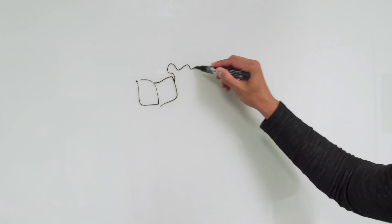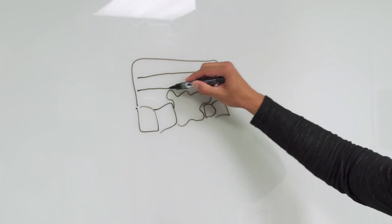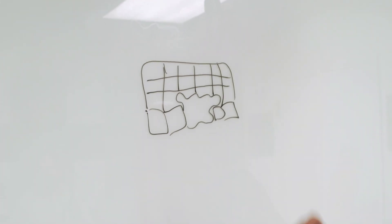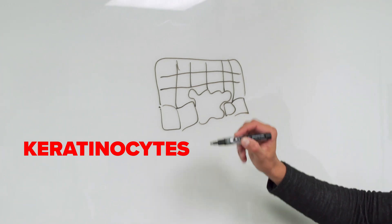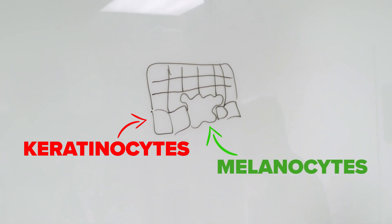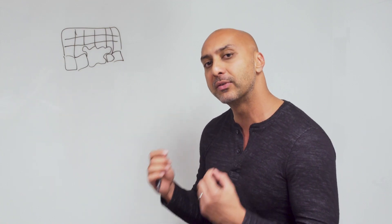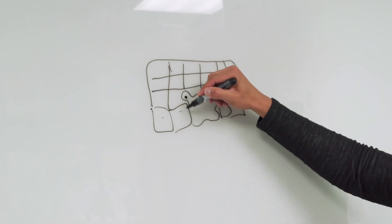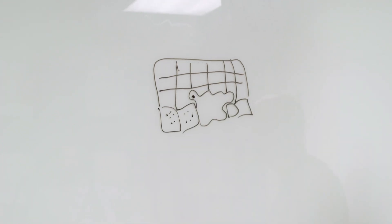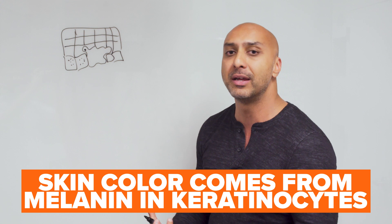No one really knows the exact cause of vitiligo, but some of the mechanism has been figured out. In our skin there are a few cell types, but for the purposes of this video, the little square cells are keratinocytes and the amorphous cell is a melanocyte. Melanocytes are the cells that produce melanin pigment, and that melanin pigment is transferred from the melanocyte into the keratinocytes. What causes the color in our skin is the melanin living in the keratinocytes.